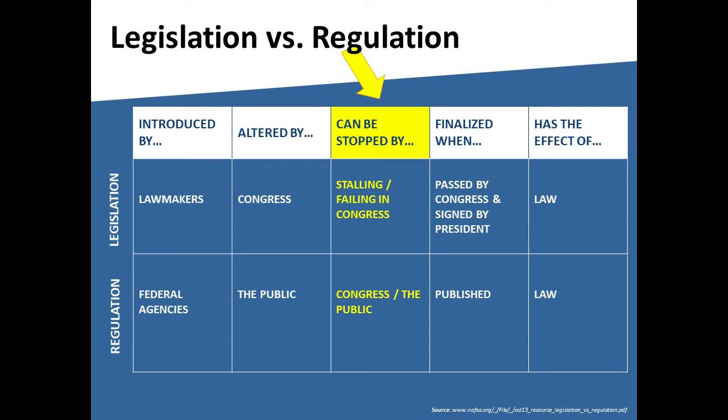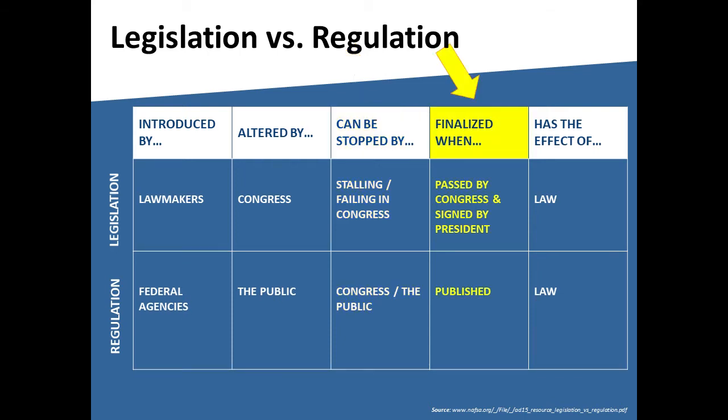One similarity between legislation and regulations at the federal level is that both can be stopped by Congress. A piece of legislation may be stopped if it stalls in the committee phase or if it fails to pass by vote. And a proposed regulation may be halted or revised if Congress disapproves or, sometimes, in response to feedback received during the public comment period. A final distinction is that a piece of federal legislation becomes a law when it is passed by Congress and the president signs it. Many states have similar processes, with the governor as the person whose signature finalizes state-level legislation.